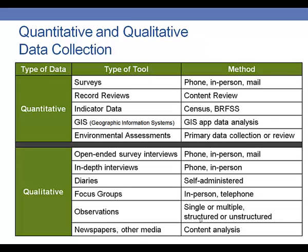We'll talk in more detail about these in chapters 12 and 13. Quantitative data that might be helpful for measuring your performance indicators include surveys, record reviews, indicator data, GIS or geographical app data, and performing an environmental assessment. Qualitative methods that might be helpful include open-ended survey interviews, in-depth interviews, diaries of your participants, focus groups, observations, and newspapers or other media. Again, we'll talk more about these in chapters 12 and 13.